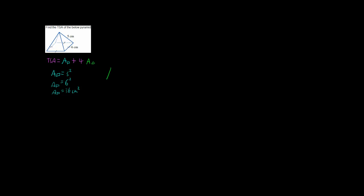Now we can look at finding the area of our triangle. If we draw a picture of our triangle, this base length is 6 centimeters, and the two equal slant sides are 5 centimeters each. The area rule most people know is base times height, but our height would be this line coming down here, which we don't have.